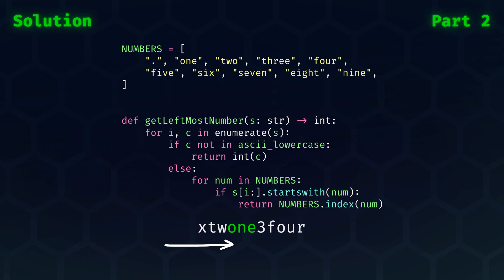For convenience, I suggest making a list called numbers, which holds all the written-out digits. Note that I add a dot as element number zero, because then indexing the string 4 actually returns the number 4, which is convenient later on.